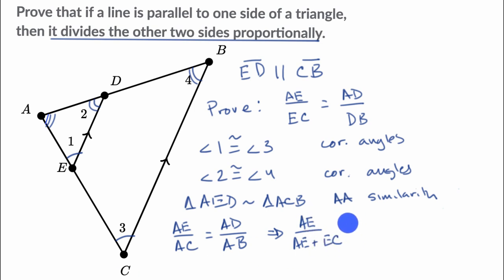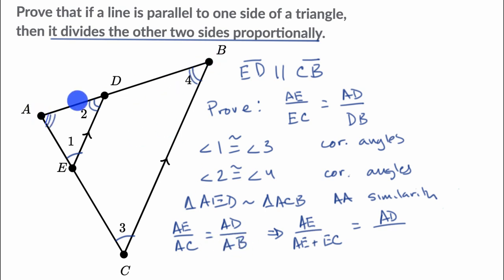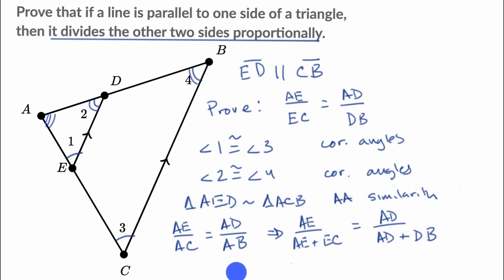So AE over AE plus EC is equal to the length of segment AD over segment AB — which is the length of segment AD plus segment DB. Now I need to figure out how to algebraically manipulate this to get the proportion we want to prove.